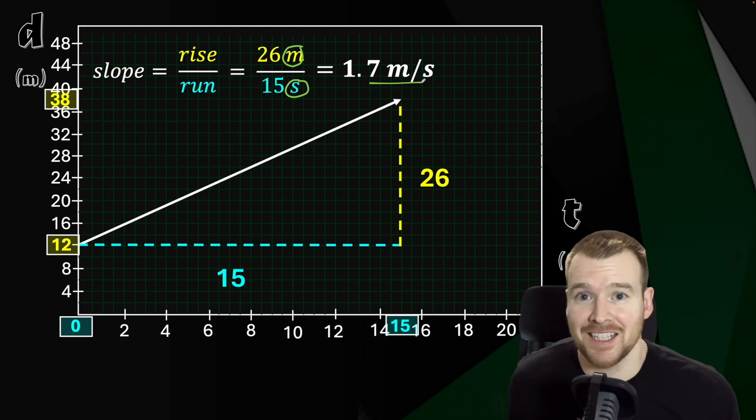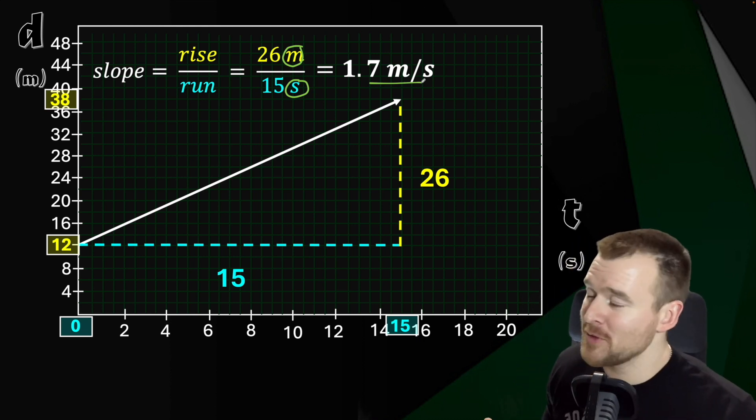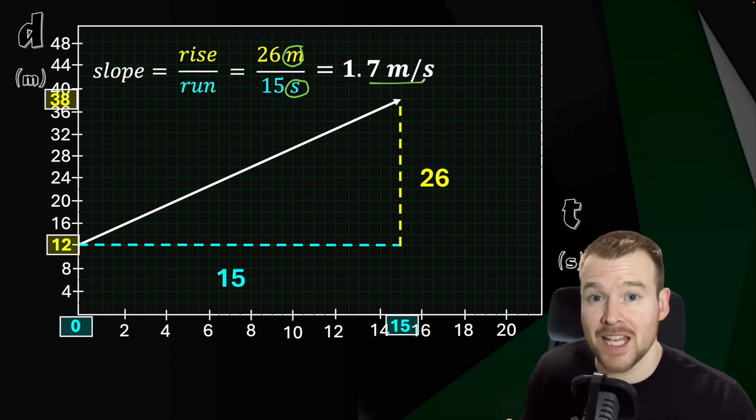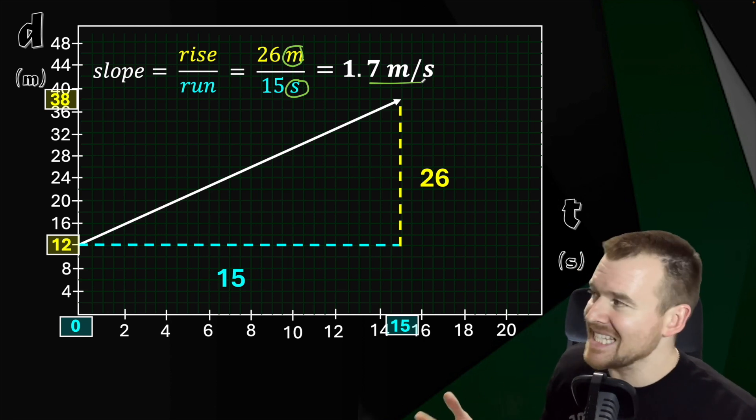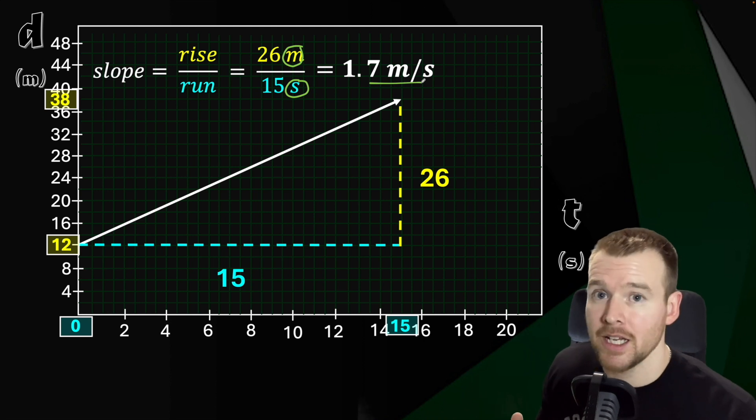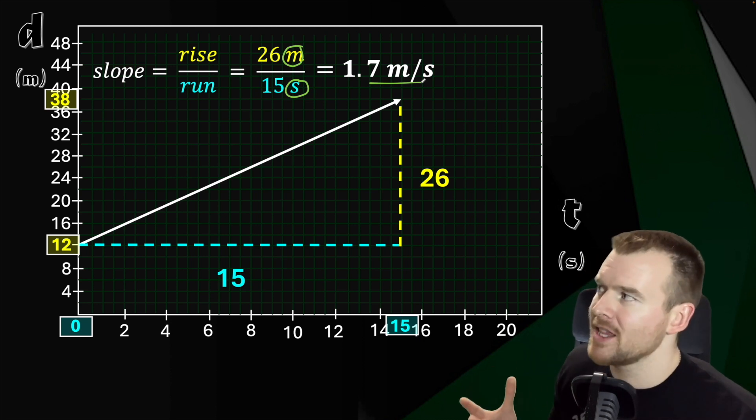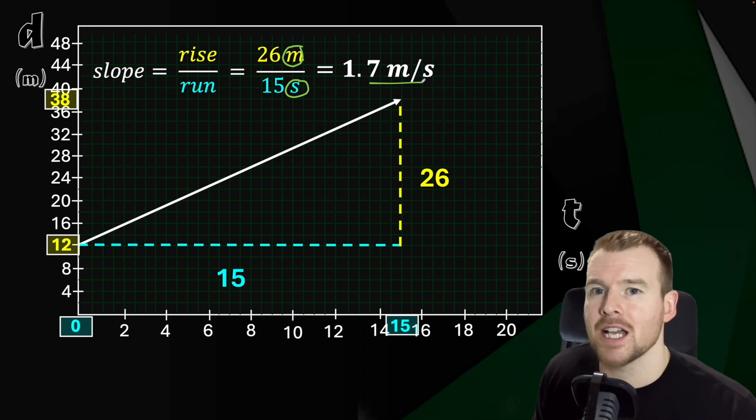And that's basically it for looking at graphing uniform motion, because as you can see, the slope of this line is consistent. It's a straight line. The slope or the steepness is the same the whole time. If slope is velocity, slope is the same the whole time, velocity is the same the whole time. So that's why this represents uniform motion or a constant velocity.